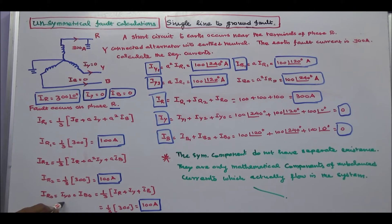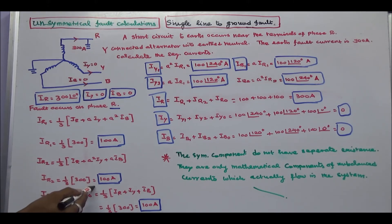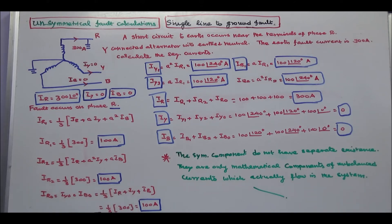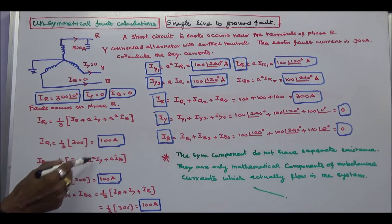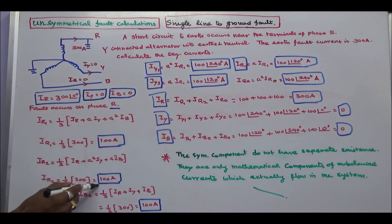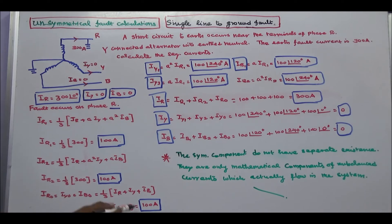Ir0 is equal to Iy0 is equal to Ib0 — the zero sequence currents are the same. That is equal to 1/3 times (Ir plus Iy plus Ib), which is 1/3 into 300, that is equal to 100 Amps. So Ir1 is equal to 100, Ir2 is equal to 100, and Ir0 is equal to 100.